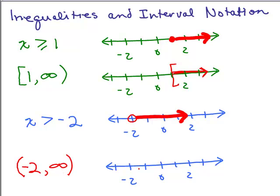How would we graph this? Instead of using the bracket on negative 2, we're going to use the parenthesis on negative 2, and then go to the right. It looks similar — instead of an open circle, we use the parenthesis, which sort of matches what it looks like in the notation.